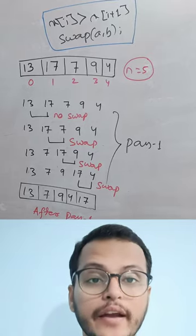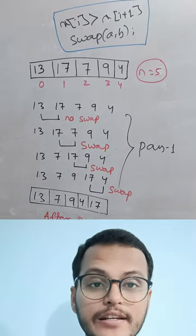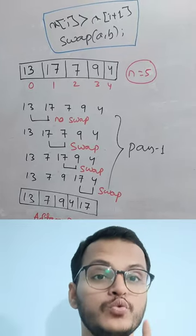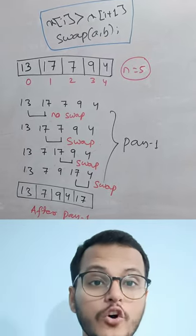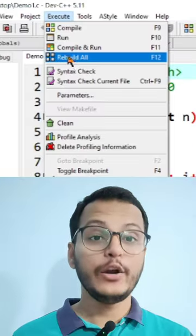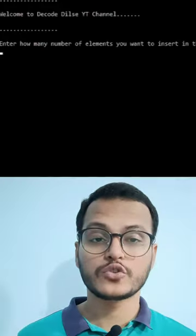Now here I have taken one unsorted array and the elements are 13, 17, 7, 9, and 4. And in pass one I will perform three swapping operations and one no swapping operation. And after pass one the unsorted array would be like this: 13, 7, 9, 4, and 17.